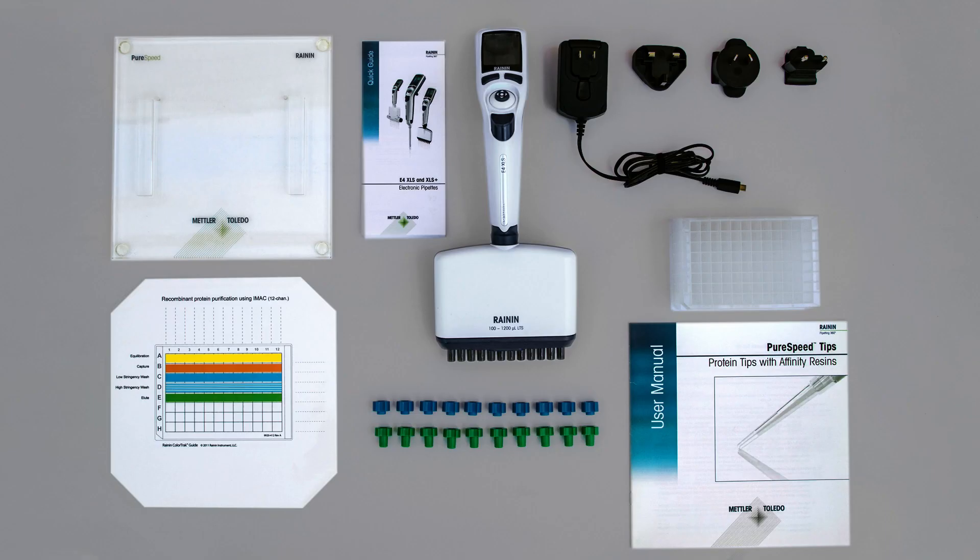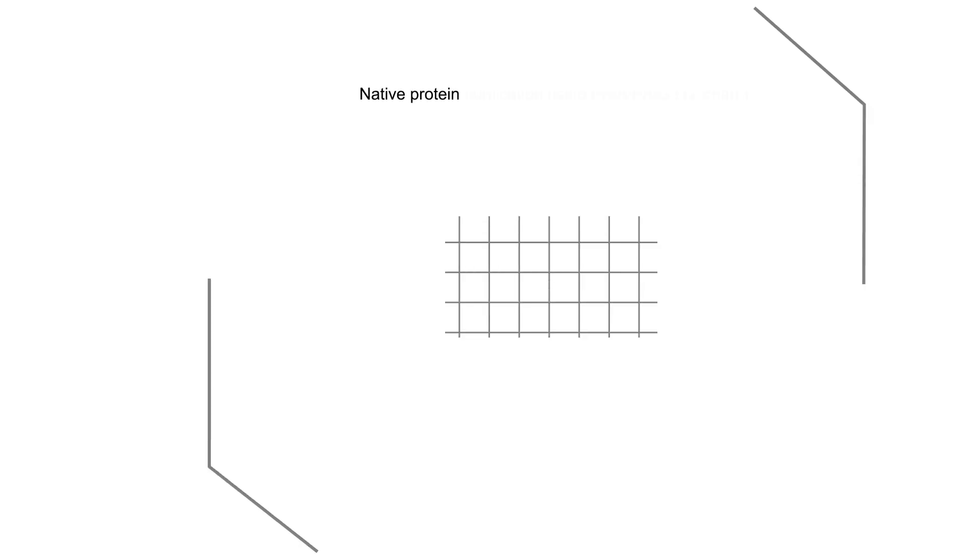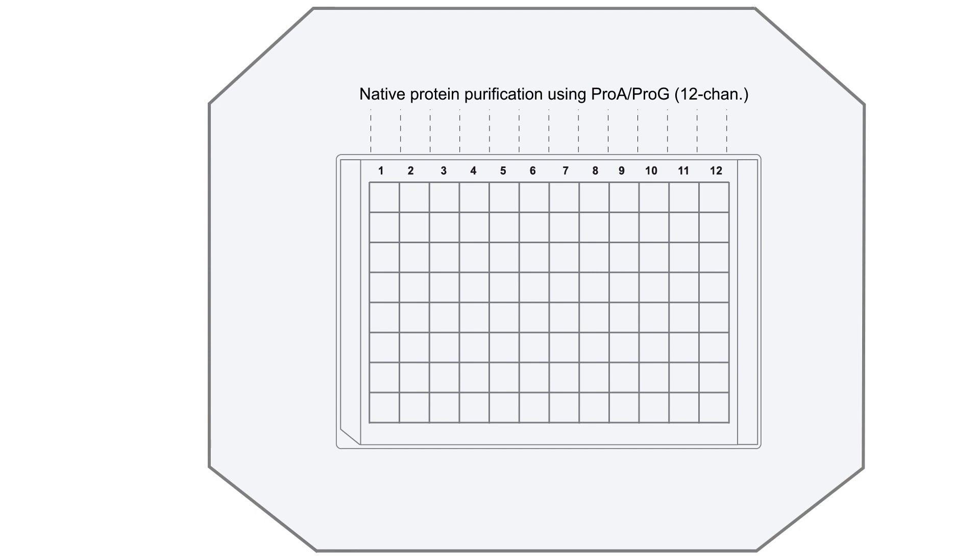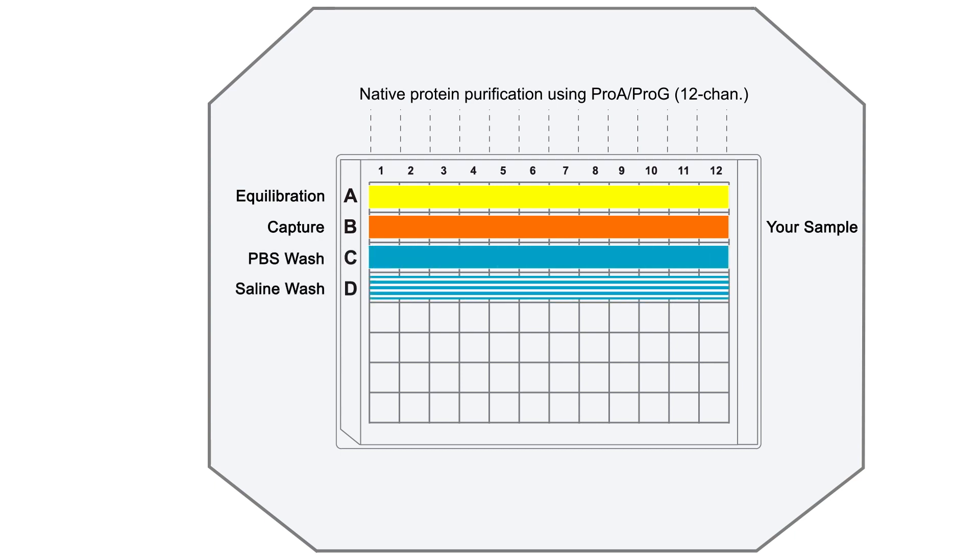The system comes with everything you need to start your purification. The ColorTrack sheet is used for setting up your deep well plate. Equilibration row is for aliquoting equilibration buffer, which removes shipping buffer and conditions Phytip columns for binding. Capture row is for aliquoting your sample. Wash buffer rows are used for different wash buffers, and elute row is used for elution.